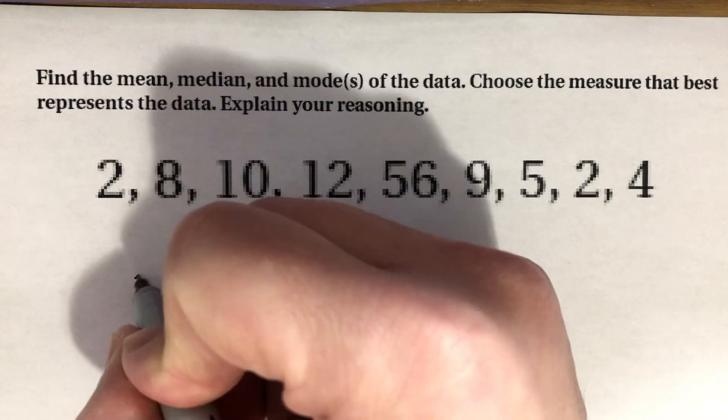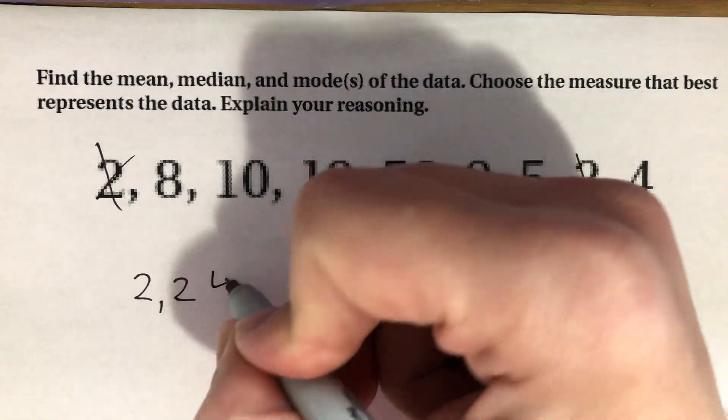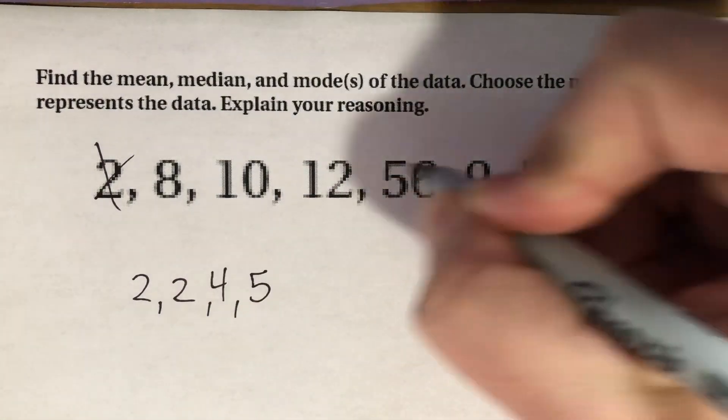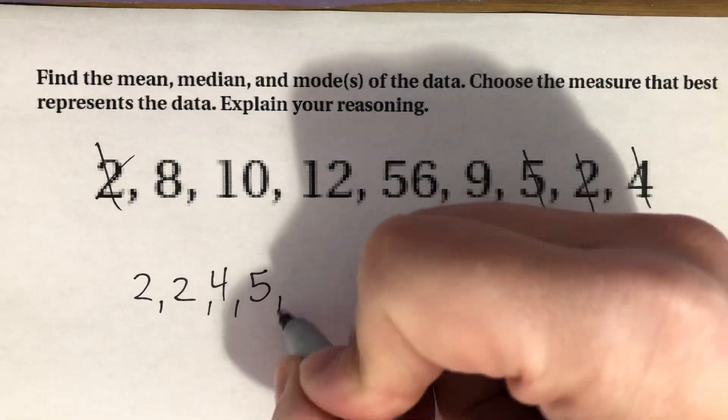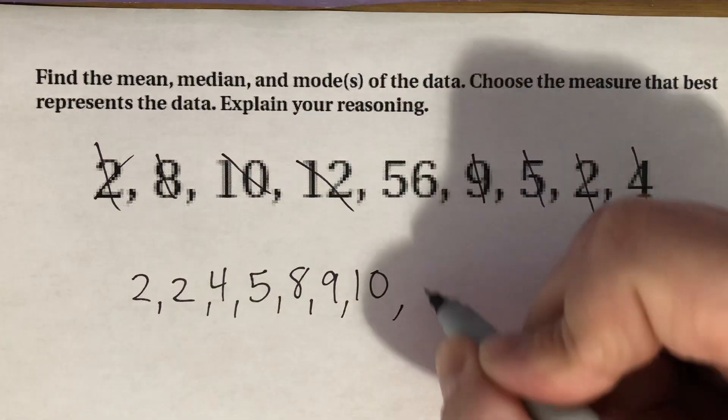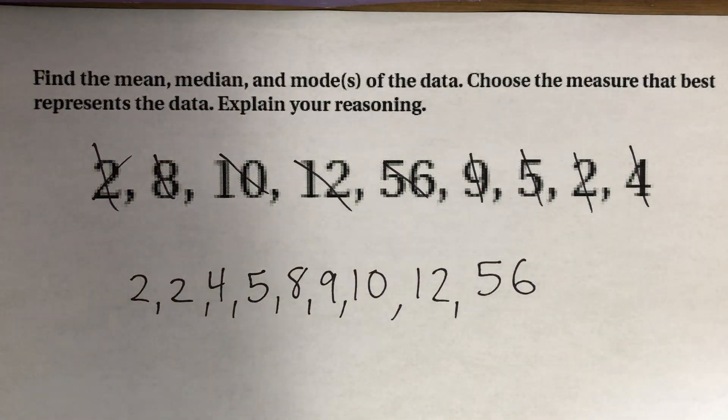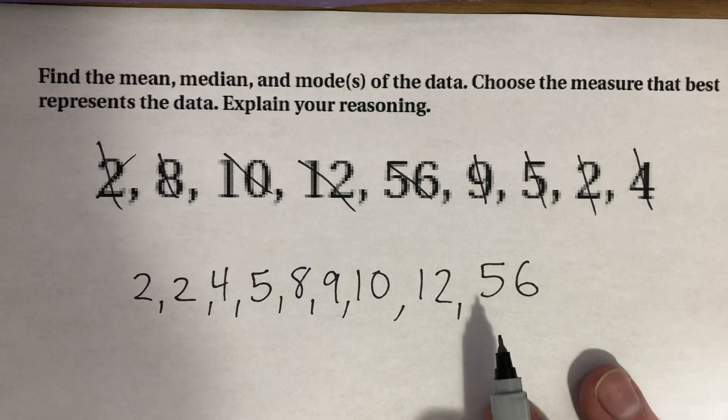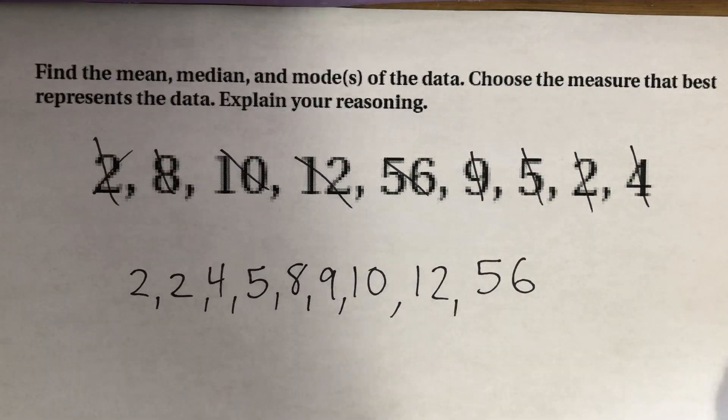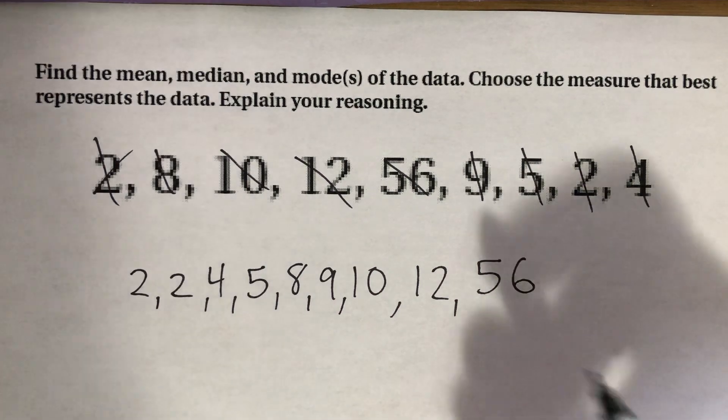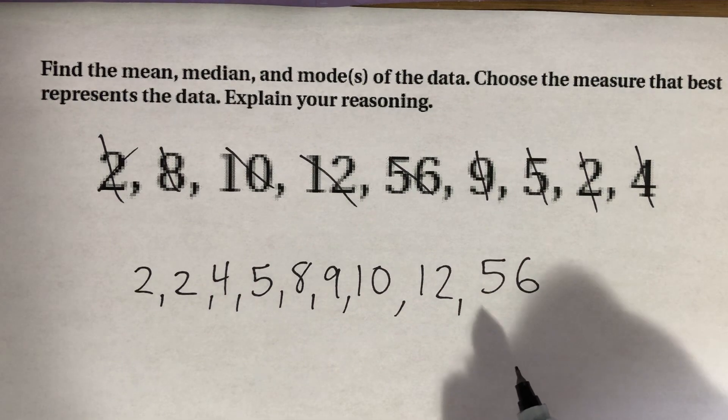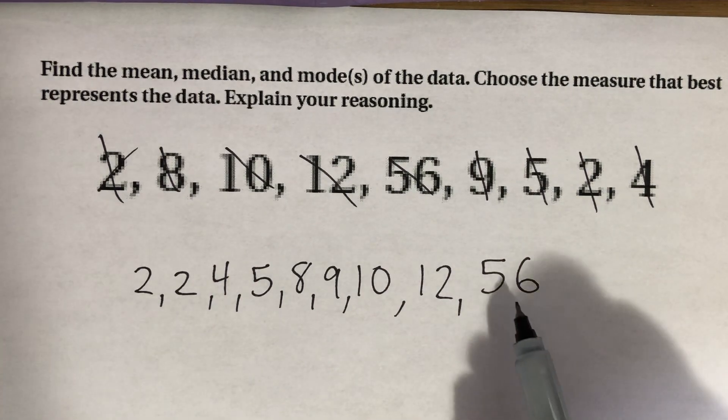So it looks to me like I've got 2, 2, 4, 5, 8, 9, 10, 12, and 56. And you can clearly see that 56 is absolutely an outlier. And it's definitely going to cause our data to be skewed. As a result, we want to make sure that we know that our mean is going to be skewed as a result of that.